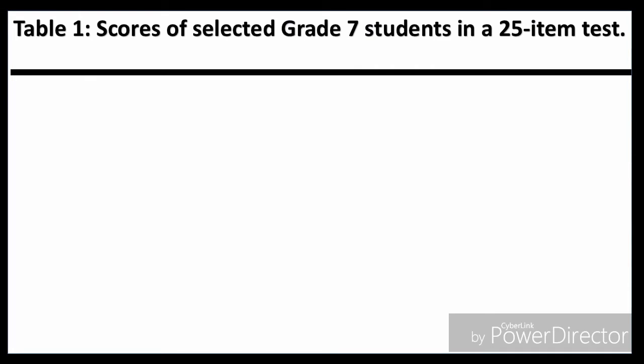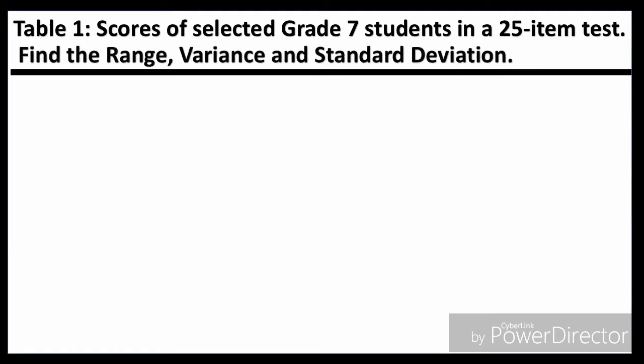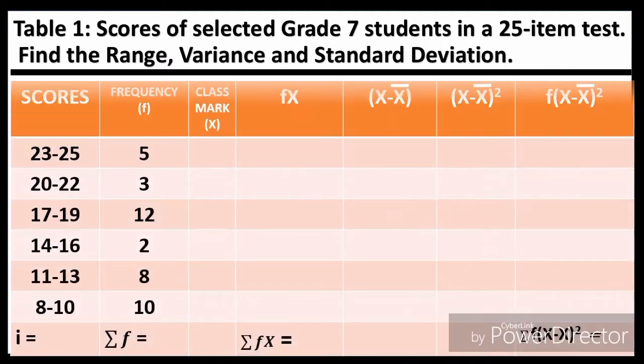So let's have problem number one, or table one — the scores of selected Grade 7 students in a 25-item test. We're going to find the range, the variance, and the standard deviation. We're going to complete this table to find the range, the variance, and the standard deviation.